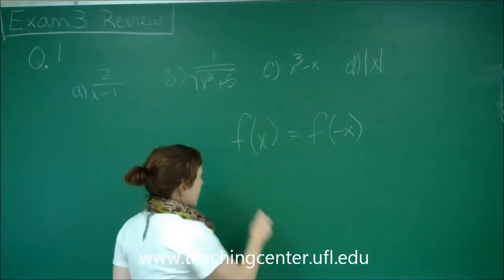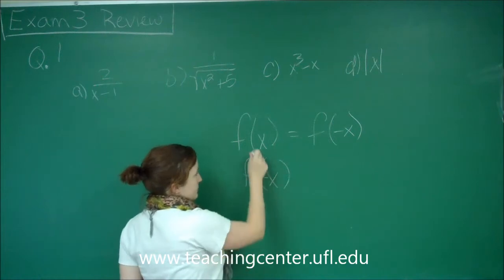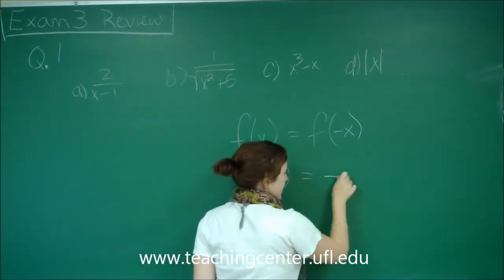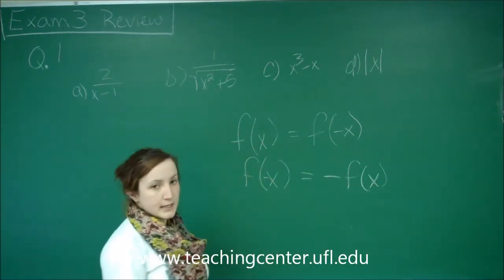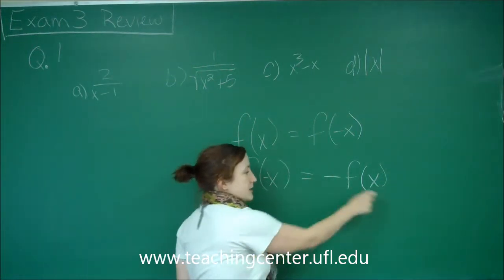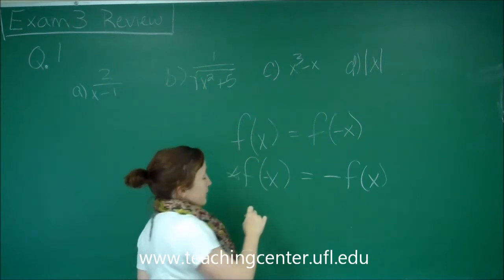Odd functions, however, say that for our function, we place in a negative x for our f of x equation. What we're going to get is a negative f of x. So what should happen is that all the signs of our function should change to where we can pull out a negative and still have our original f of x equation. So this is what we're looking for here. We want that odd function.